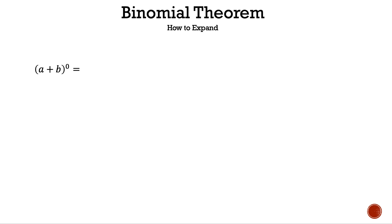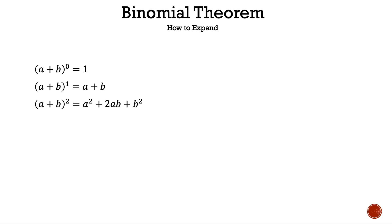So how do we expand binomial expressions using the binomial theorem? The first three you should recognize because you have seen them multiple times in your math career. The quantity of a plus b raised to the power of 0 is 1, since anything raised to the power of 0 is 1. The quantity of a plus b raised to the power of 1 is a plus b, since anything raised to the power of 1 is itself. The quantity of a plus b raised to the power of 2 is a squared plus 2ab plus b squared.